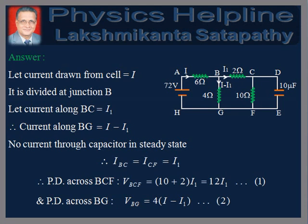We know that in steady state, current through a capacitor is zero. Therefore, current through CF is also equal to I1.